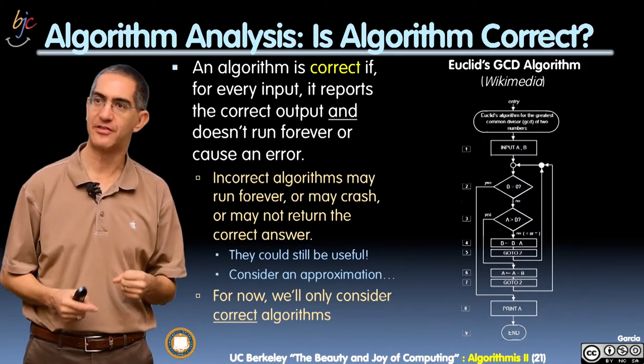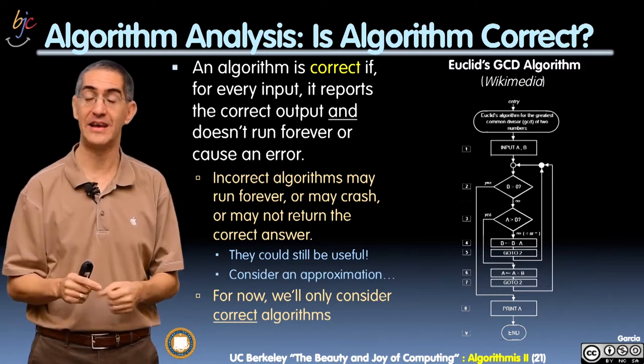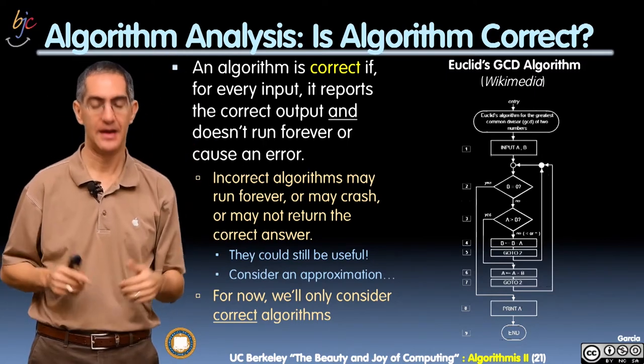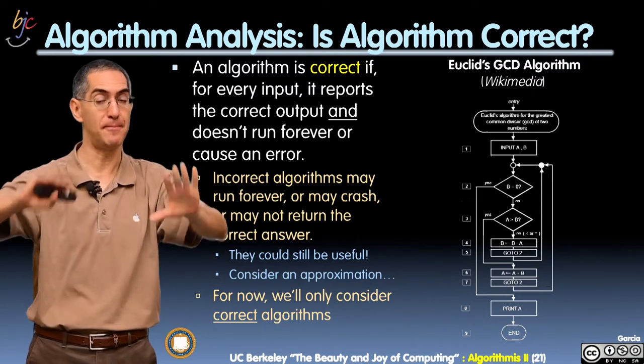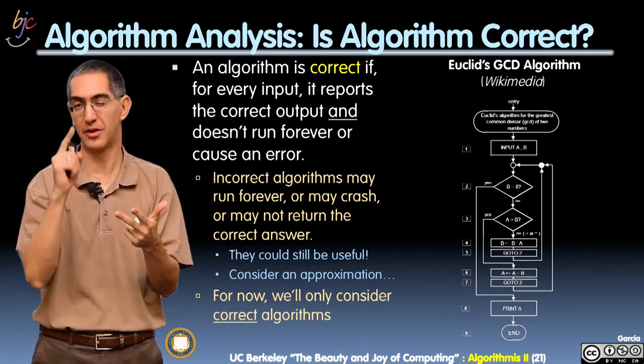You have to ask yourself, is an algorithm correct? We're talking about correctness. So an algorithm is correct if for every single input it reports the correct output and does not crash and does not run forever. That's really important.